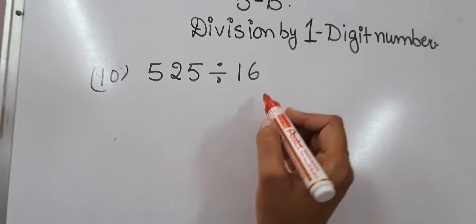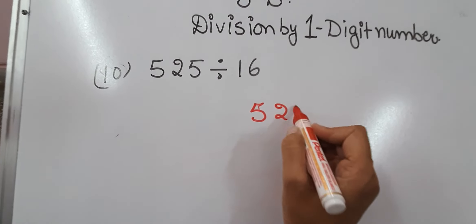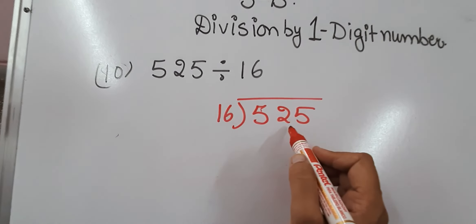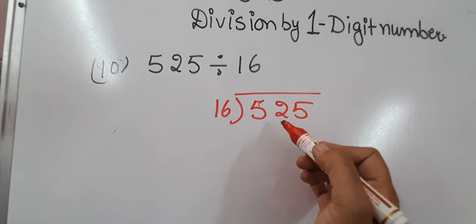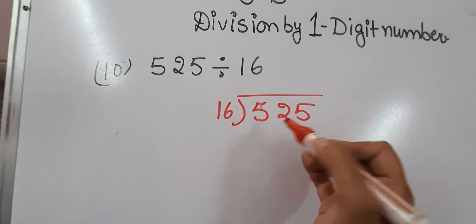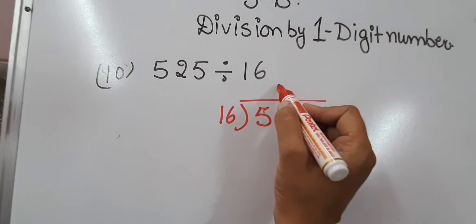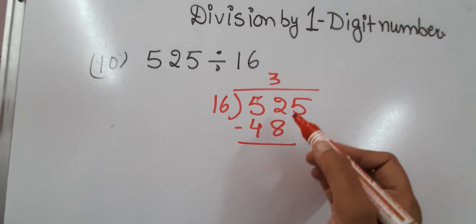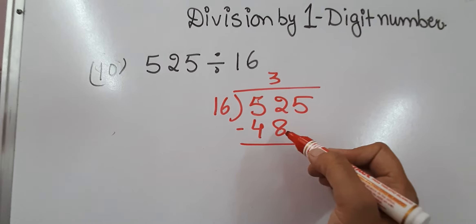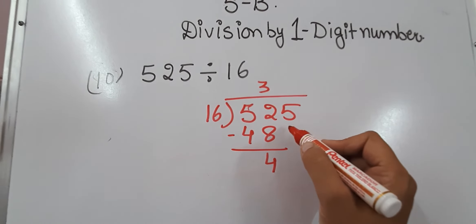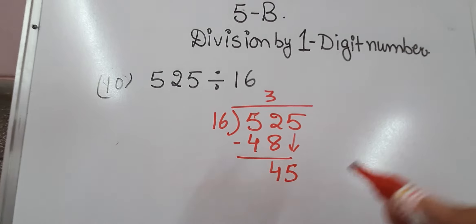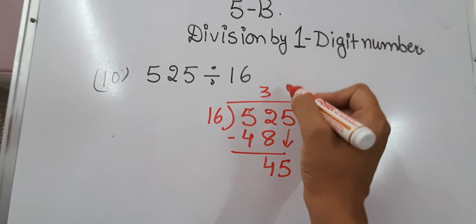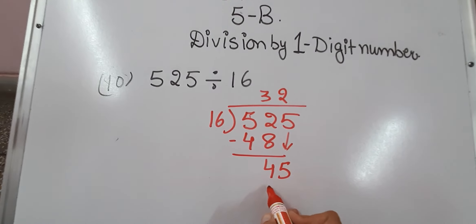Let's take another example: 525 divided by 16. We will take 52 together. In the table of 16: 16×3 is 48, which is just smaller than 52. We subtract and get 4. We bring down the next digit. Now 16×2 is 32, which is just smaller than 45.